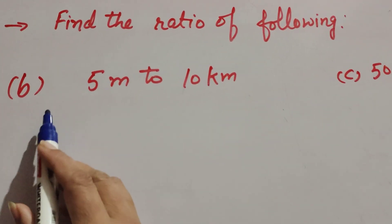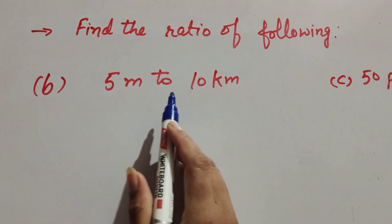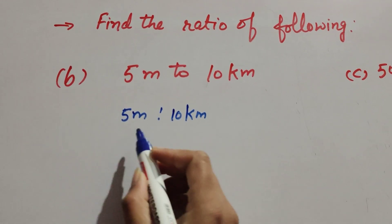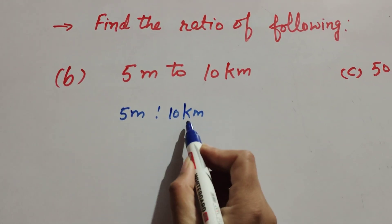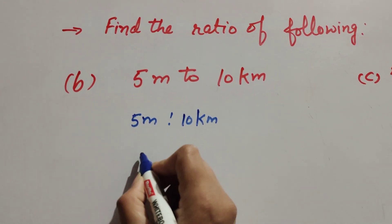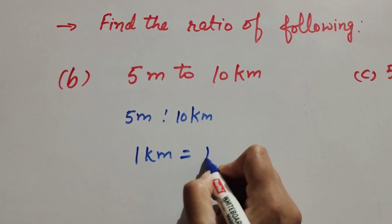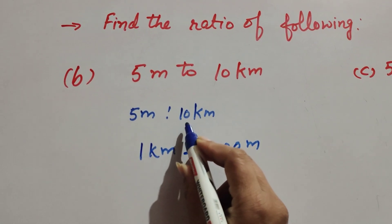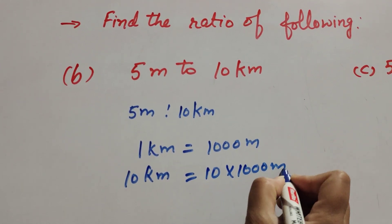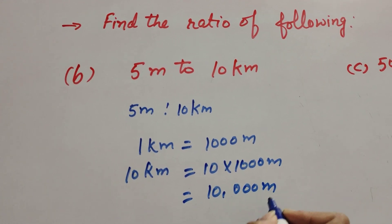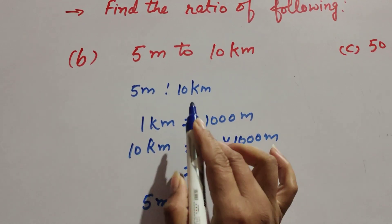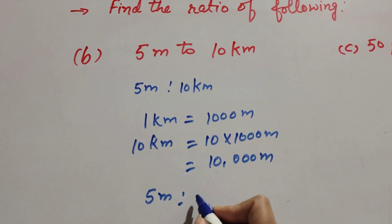Now we move to part B. We find the ratio of 5 meters to 10 kilometers. Since meter and kilometer are different units, we first make the units equal. We change kilometers to meters. We know 1 kilometer equals 1000 meters, so 10 kilometers equals 10 multiplied by 1000 meters, which equals 10,000 meters. So the ratio is 5 meters to 10,000 meters.